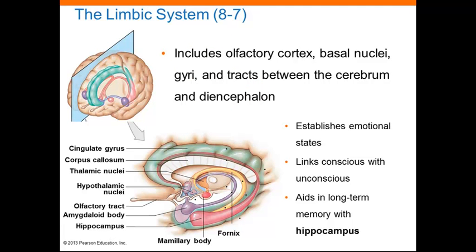The amygdala is a component of the limbic system. The limbic system includes the olfactory cortex, basal nuclei, gyri, and tracts between the cerebrum and the diencephalon. This is really more of a functional grouping than an anatomical one. The limbic system establishes emotional states and links the conscious with the unconscious. It also aids in long-term memory with help from the hippocampus.